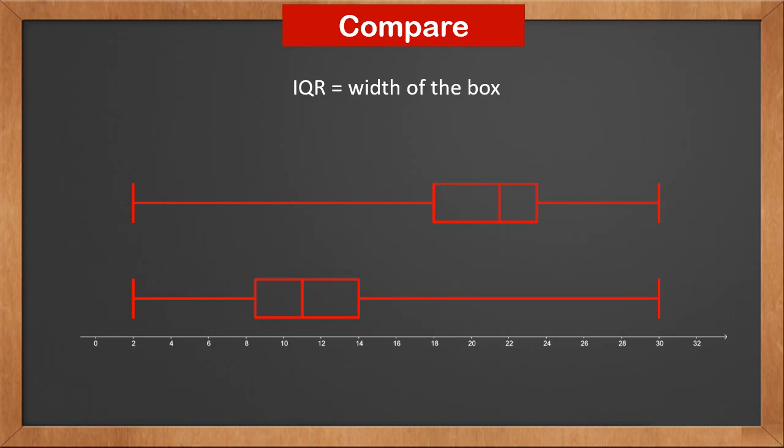However, the box of the first set is more towards the higher end, and the second set is more towards the lower end. So we know there are more larger numbers in the first set and more smaller numbers in the second set. The raw data proves our conclusion.